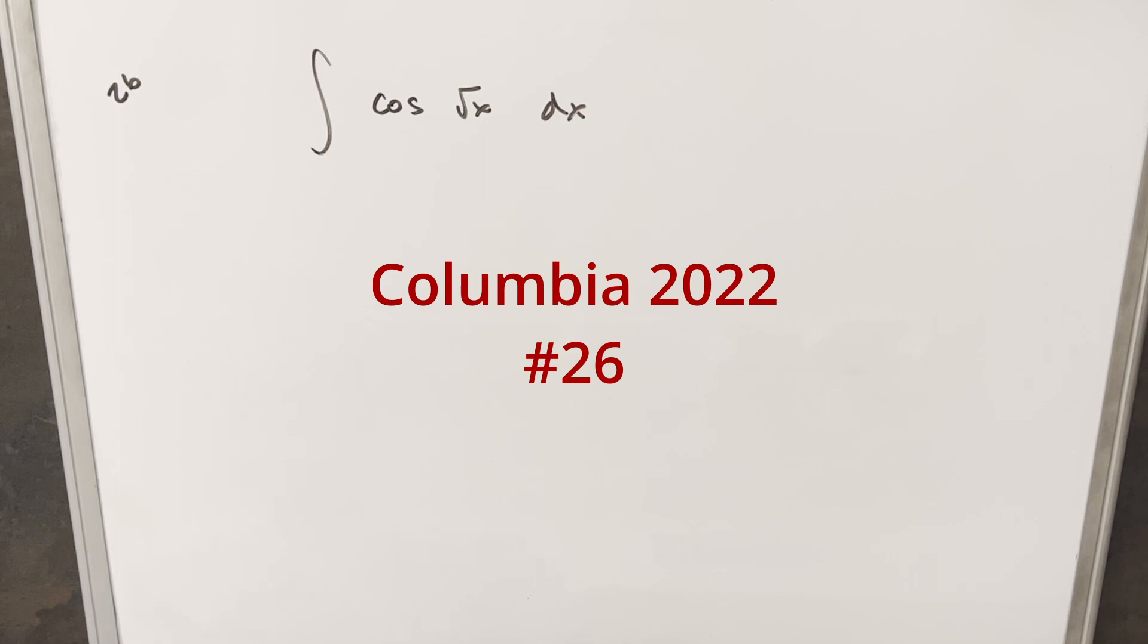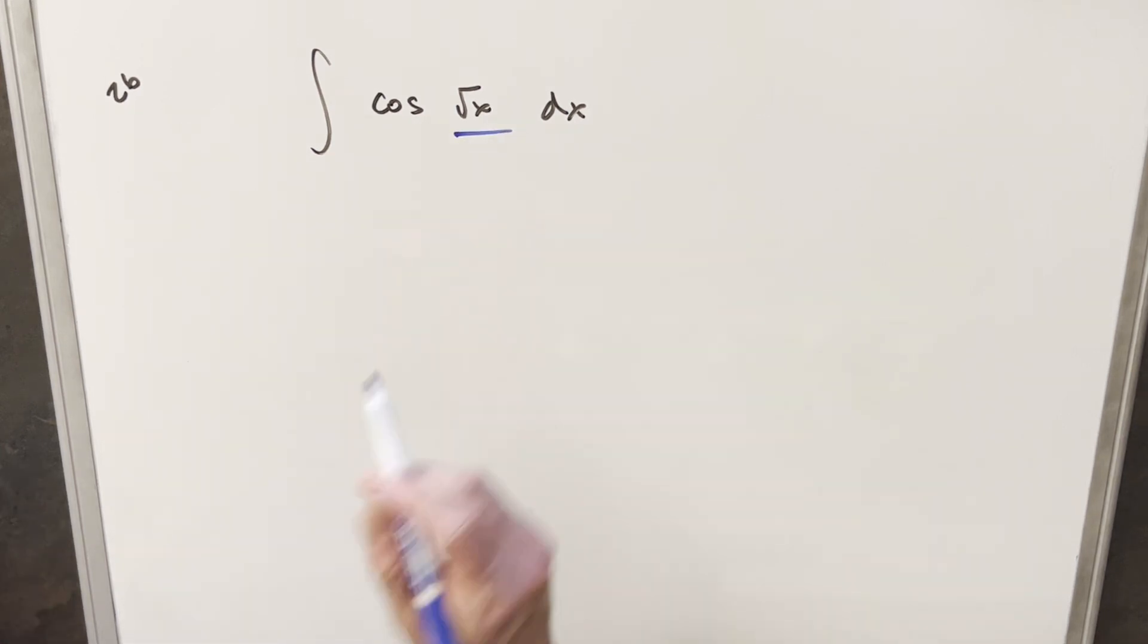We have the integral of cosine square root of x dx. Of course we know how to integrate cosine. This will be really easy, except for the square root's going to cause a few extra steps.